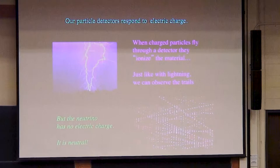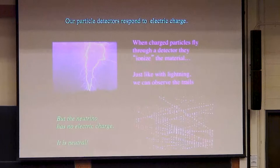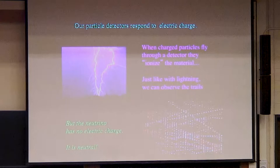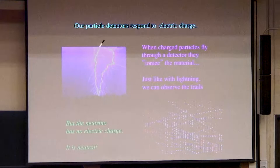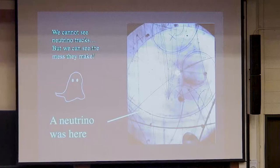So how do you actually see something like that? Our first problem is that the neutrinos are neutral, and our detectors respond to electric charge. So seeing a neutral particle is a little bit of a problem. When charged particles fly through a detector, they ionize the material — very much like what you see in a spectacular thunderstorm. Just like with lightning, we can observe the trails of ionization. But the neutrino has no electric charge, so how are we going to see it at all?